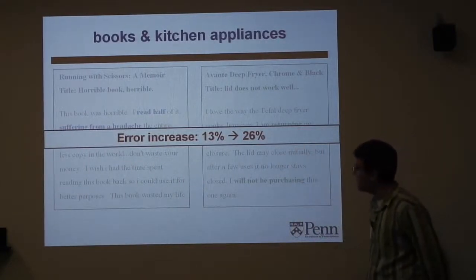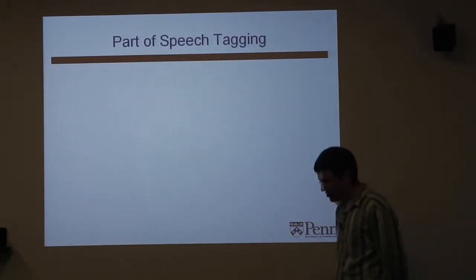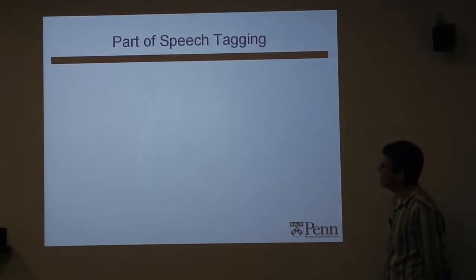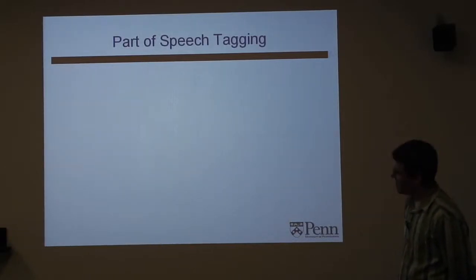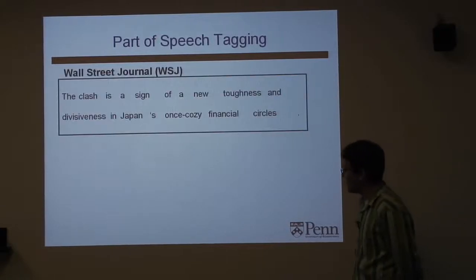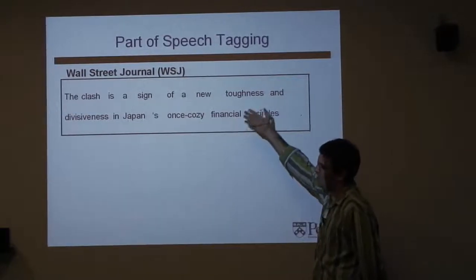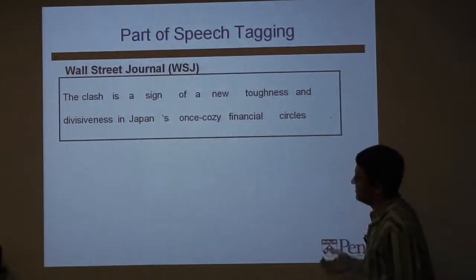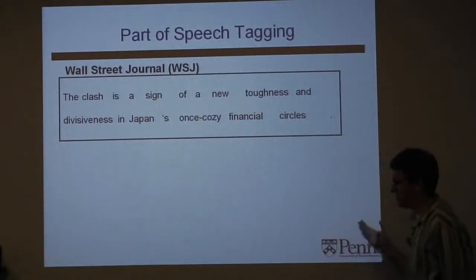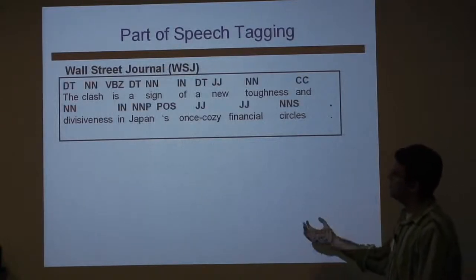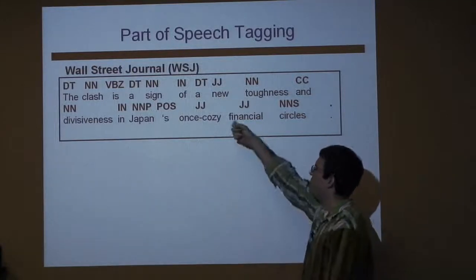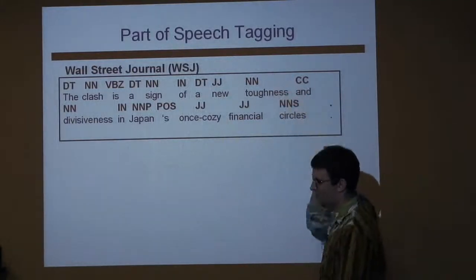The other task I'm going to address is a more traditional NLP task: part-of-speech tagging. We get training data from the Wall Street Journal — a large corpus of annotated financial news. The task is to take each word and annotate it with its grammatical function, so something like 'once cozy' is an adjective, 'toughness' is a noun. There are people at Penn interested in building NLP pipelines for biomedical abstracts who want NLP tools for biology text but don't have any labeled text.